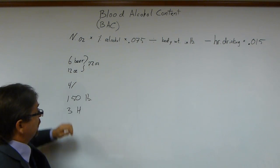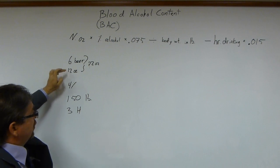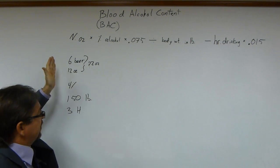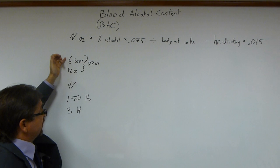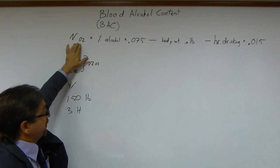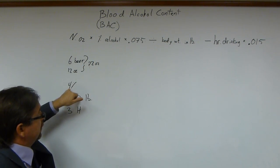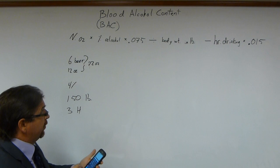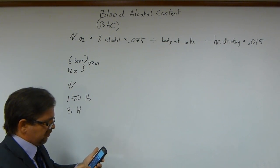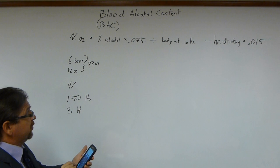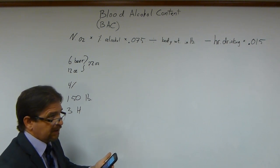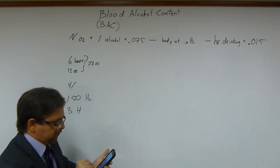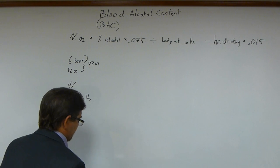Number of ounces: we had 6 times 12, which is 72 ounces. So 72 times 4 percent times 0.075. That gives us 72 times 4, which is 288, times 0.075, which equals 21.6.